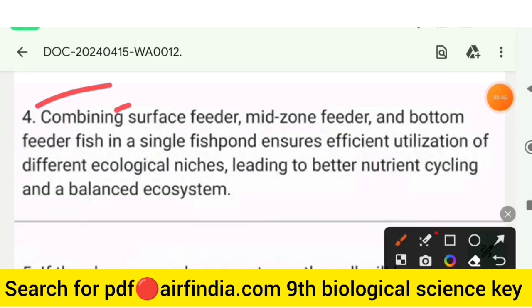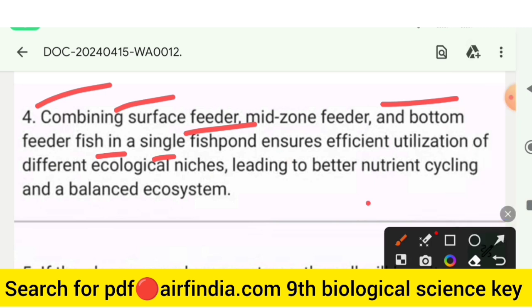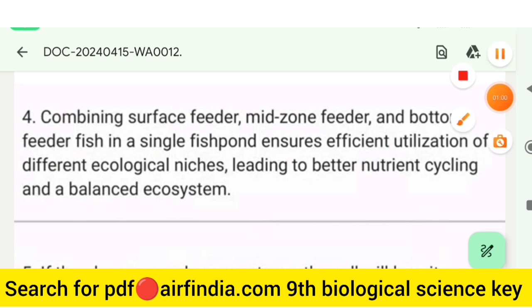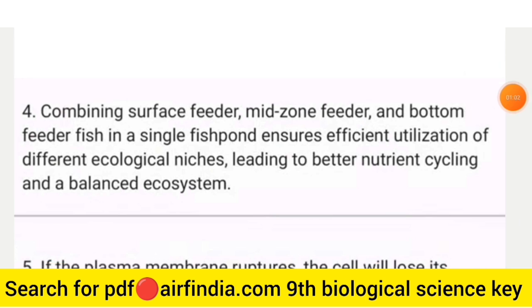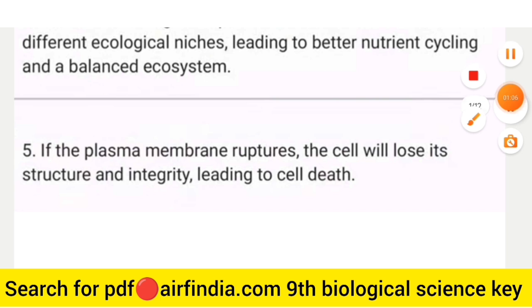Question number 4 answer: combining surface feeder, mid-zone feeder, and bottom feeder fishes in a single fish pond ensures efficient utilization of different ecological niches, leading to better nutrient cycling and a balanced ecosystem.